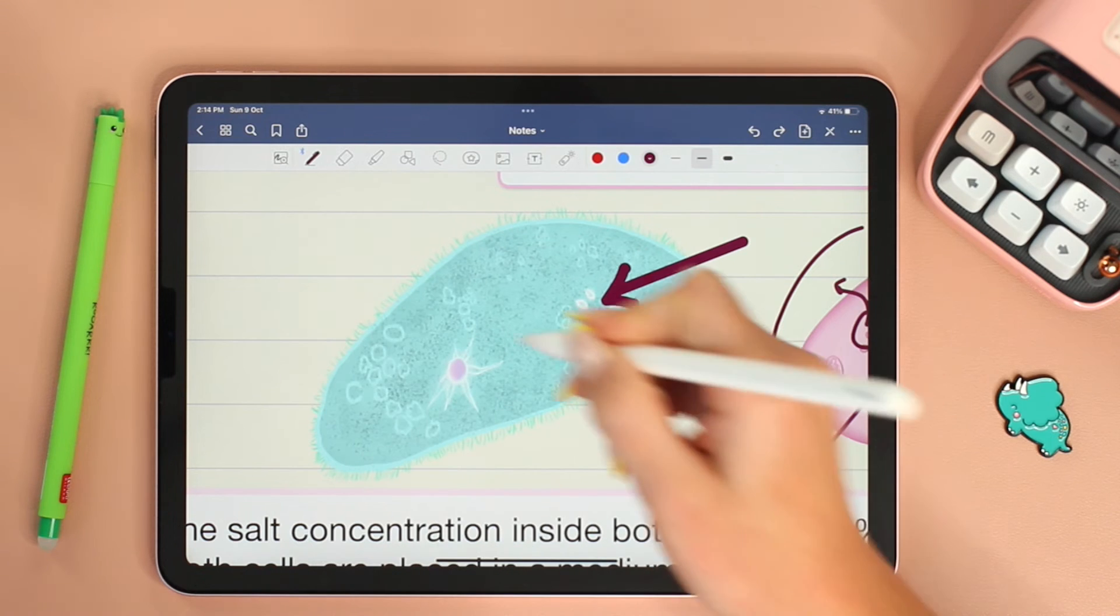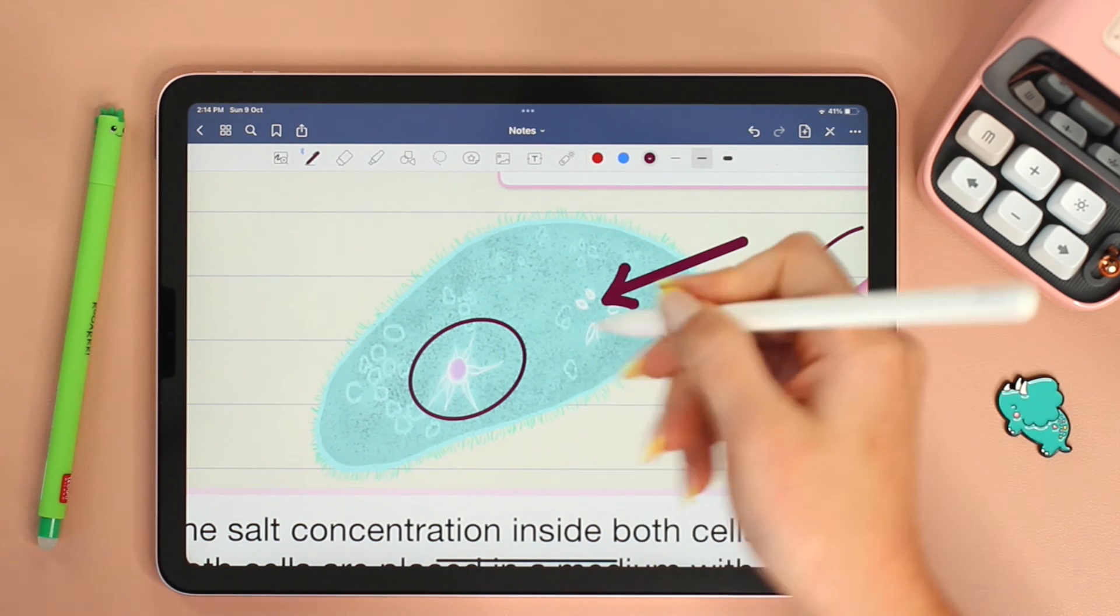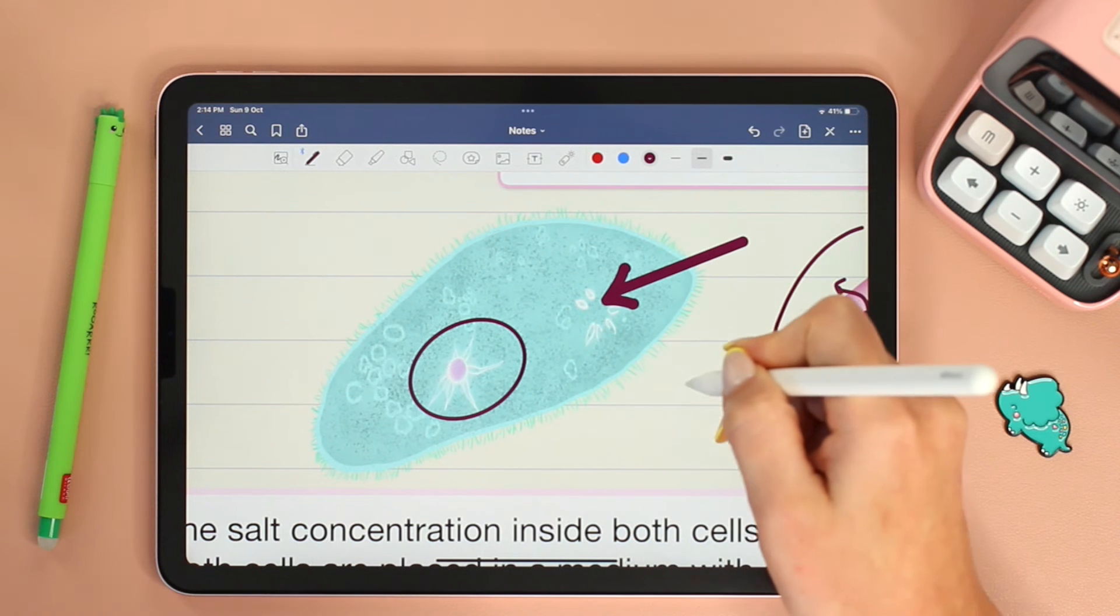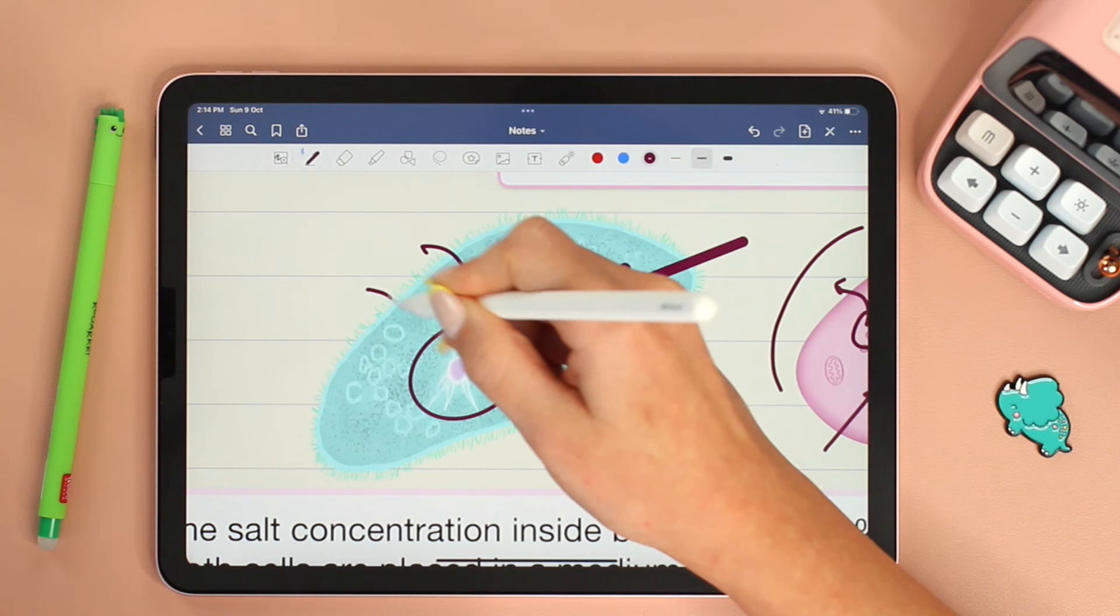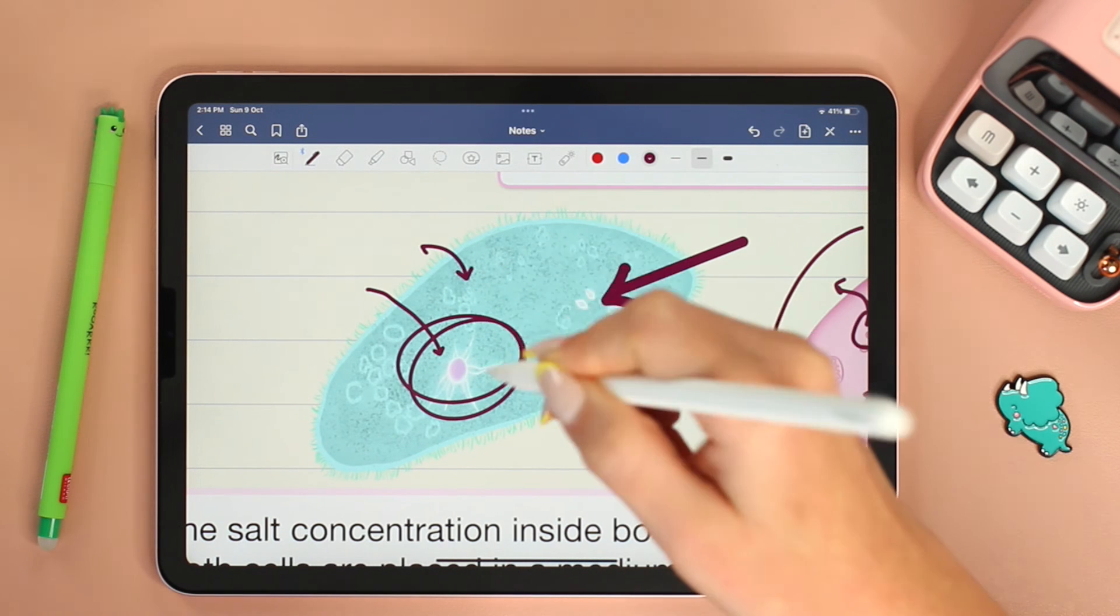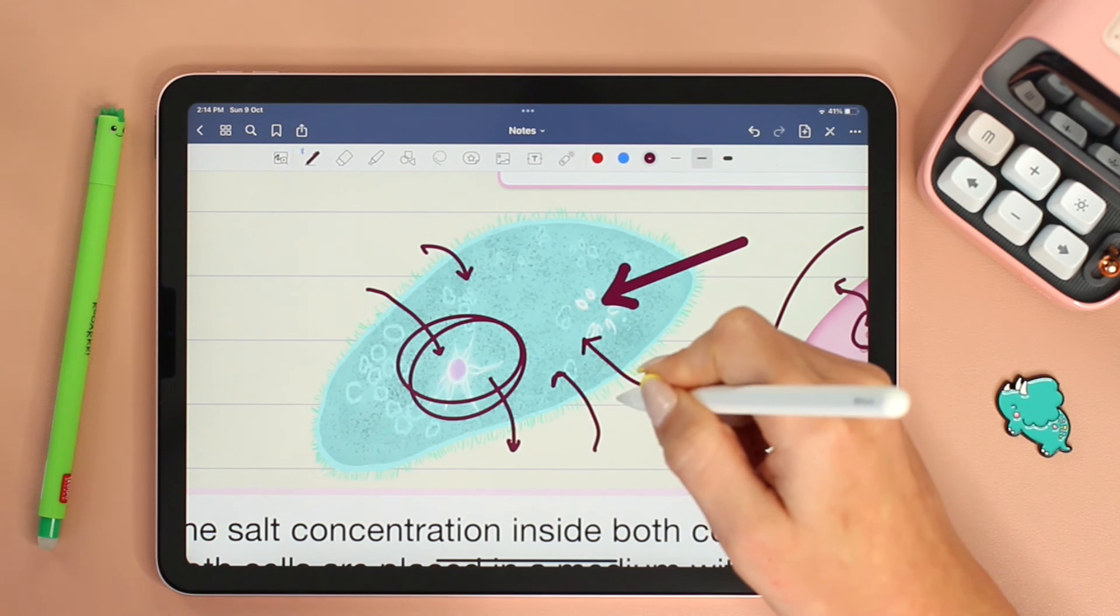While the paramecium has contractile vacuoles that are specialized in regulating the quantity of water inside the cell. So as water molecules move in, the contractile vacuole fills up with water that it later pumps out of the cell to protect the cell.